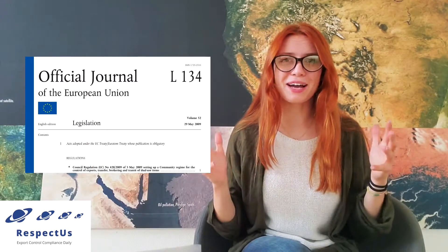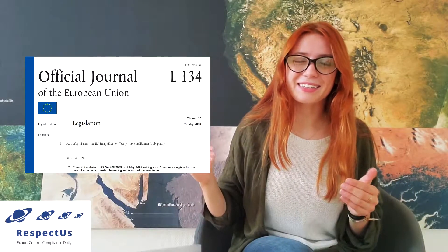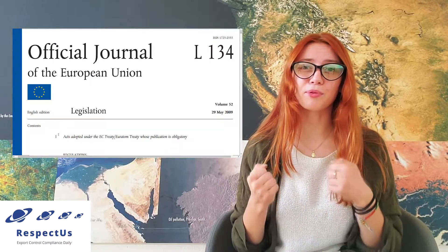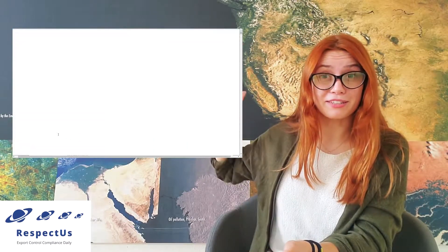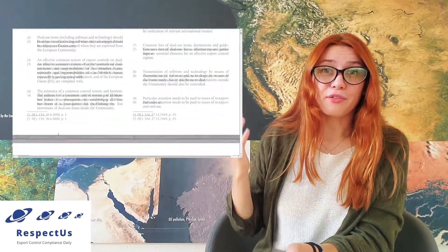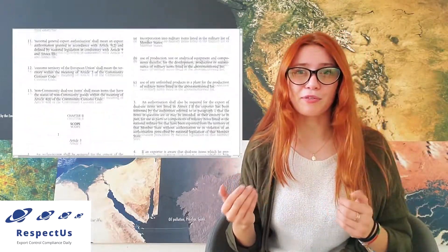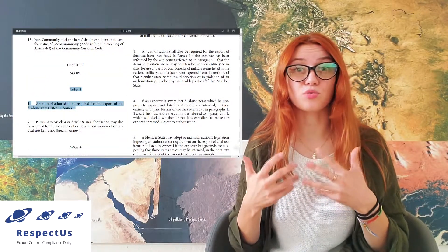Now it's the time to unveil this big mystery, go through this legal text and hopefully find answers to all our initial questions. The first thing we will do is identify the applicable rule. If we scroll the document down a little bit we find Article 3, saying that an authorization shall be required for the export of dual-use items listed in Annex 1.